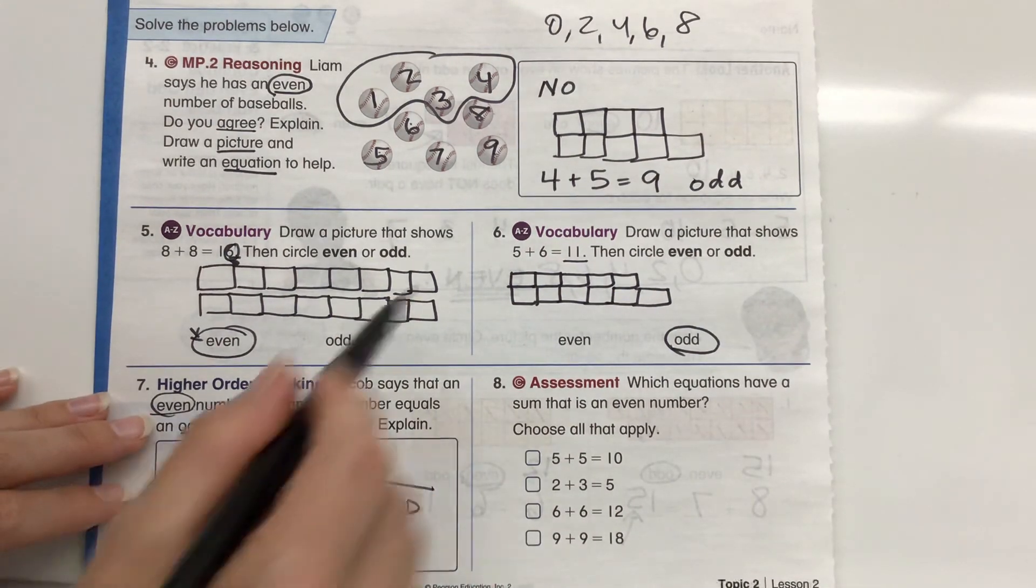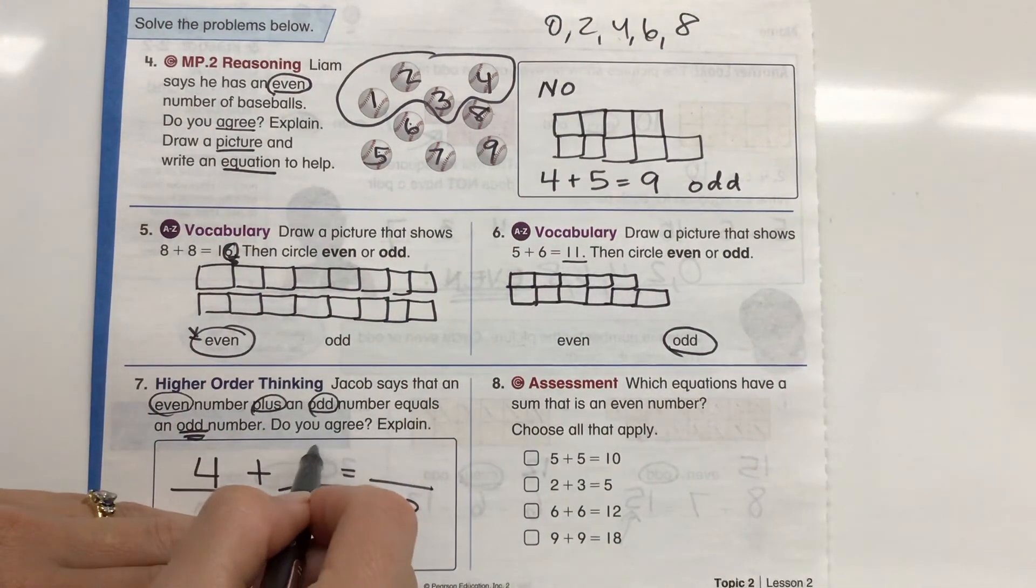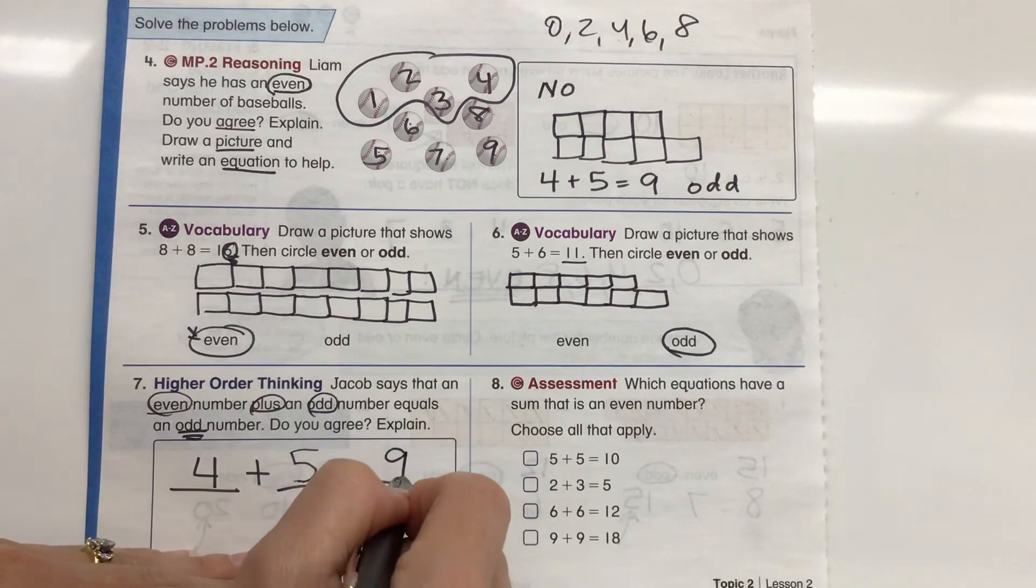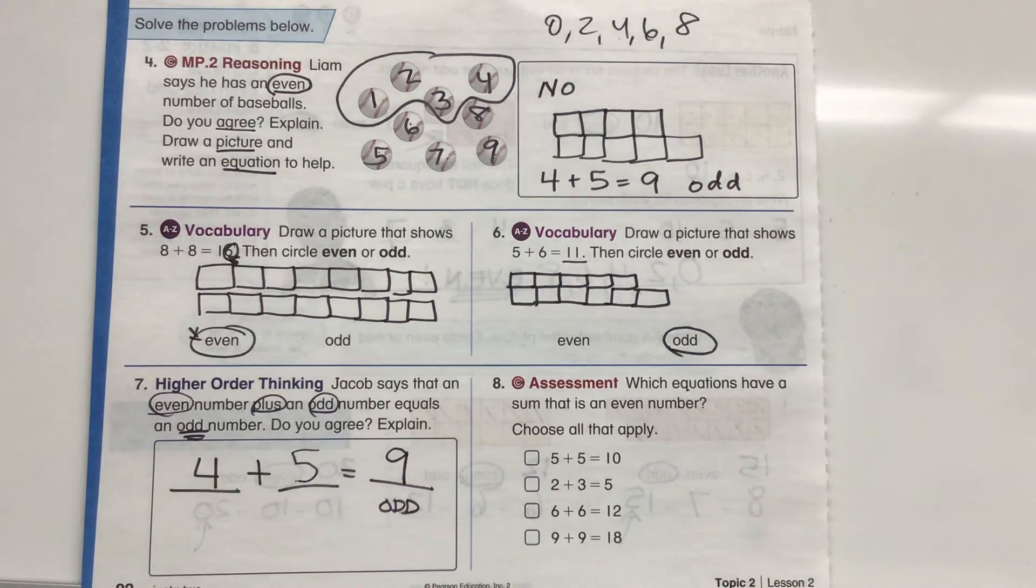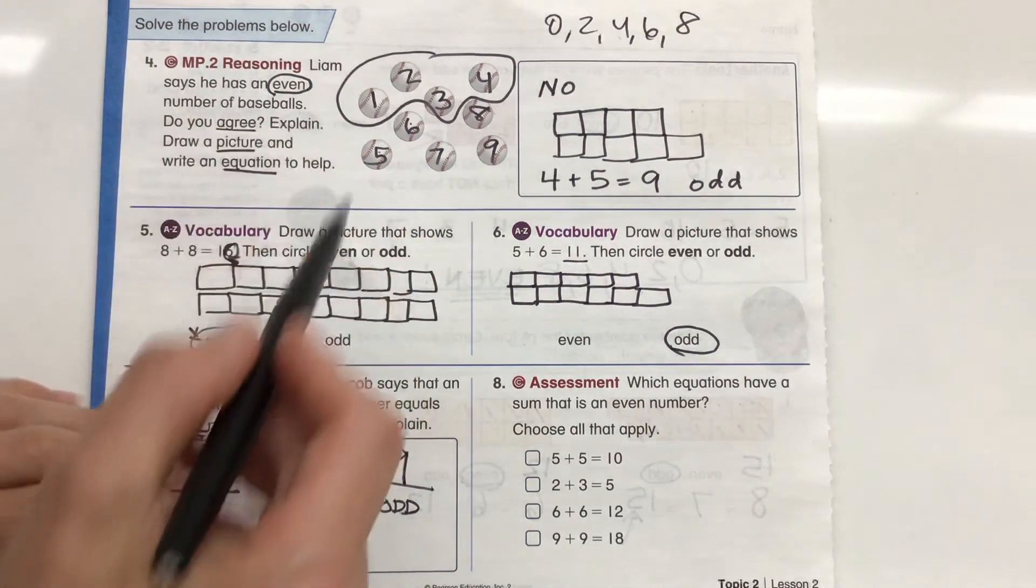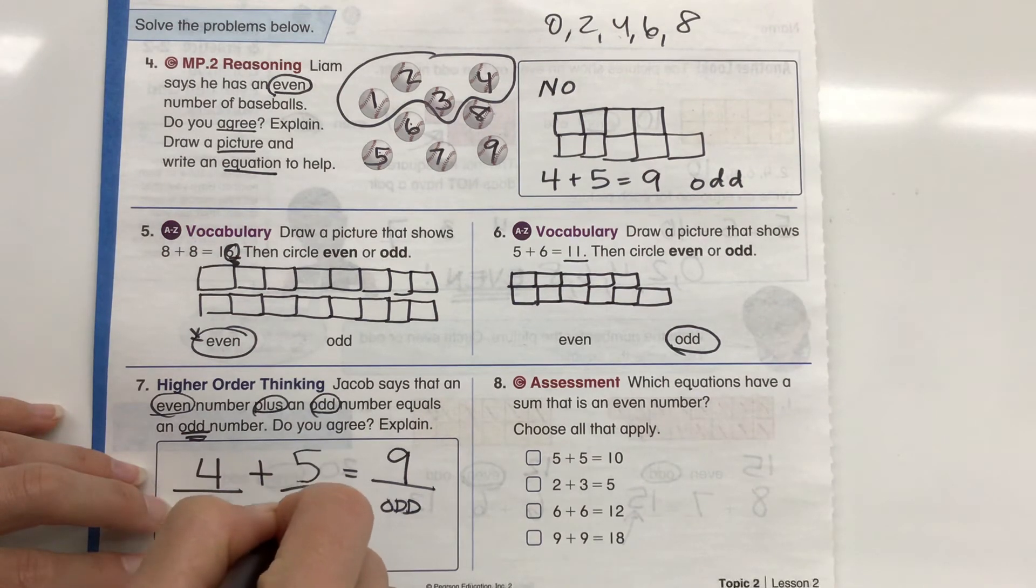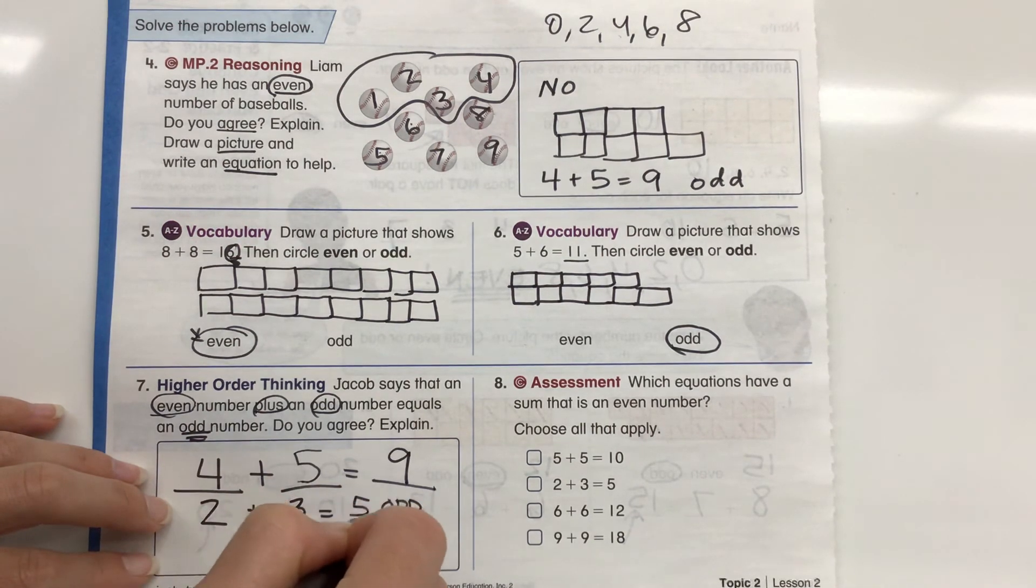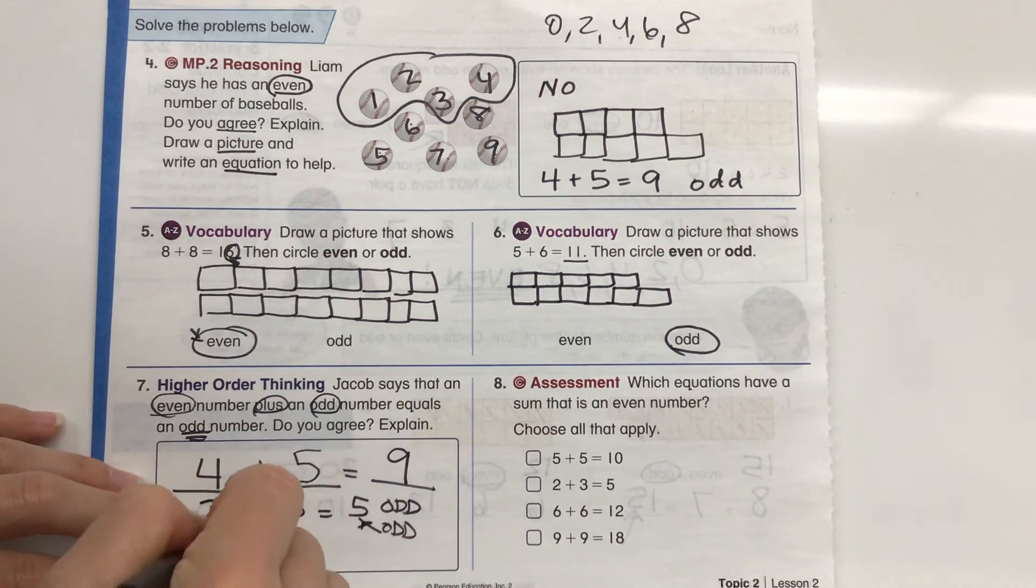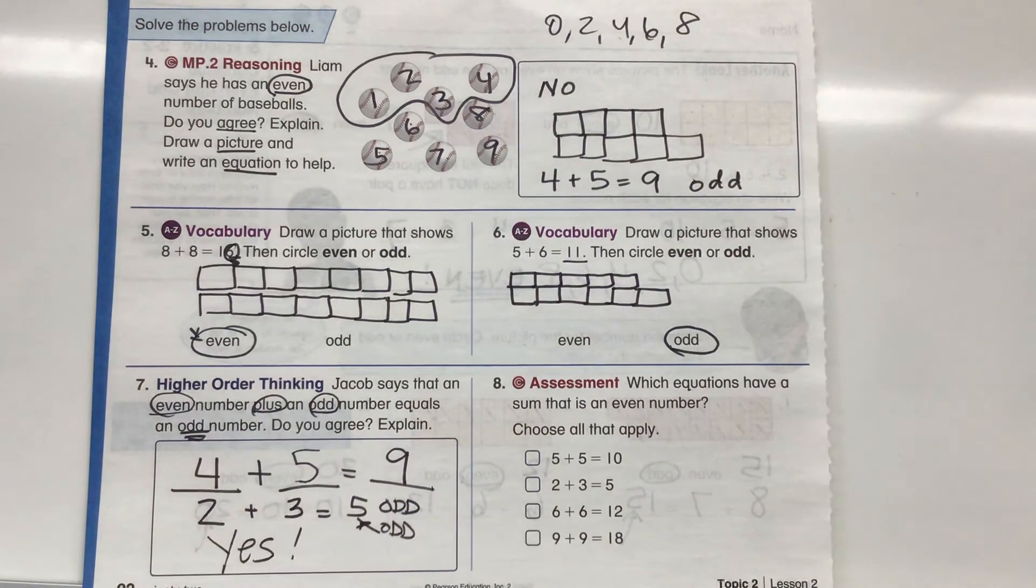And he says it's going to be odd. I'm going to pick an even number. Let's see. I'm going to pick 4. And an odd number is 5. 4 plus 5 is 9. Oh, 4 plus 5 is 9. 9 is an odd number. So do we agree? I'm going to try one more just to see. I'm going to do another even number of 2 plus an odd number of 3 equals 5. Oh, yep. 5 is another odd number. So do I agree? Yes. And our pictures explain how we did it. So you don't need to write out any words there.